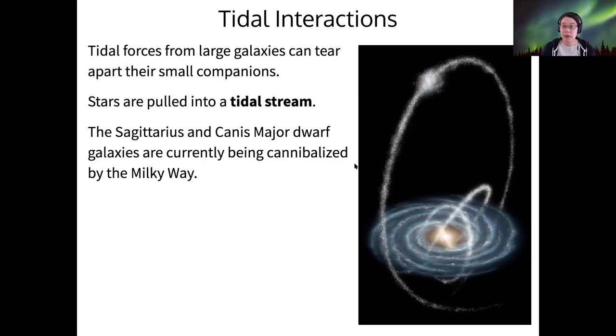This process is currently happening to at least two dwarf galaxies in that orbit the Milky Way. And I say at least because it's hard to see some of these dwarf galaxies. They're on the other, at least the Sagittarius is on the other side of the disk from us. And so it's possible that there are other dwarf galaxies we have not yet observed. We have at least observed Sagittarius and we can make out the traces of the tidal streams from both of those dwarfs.